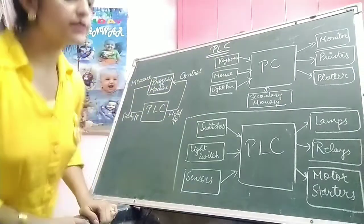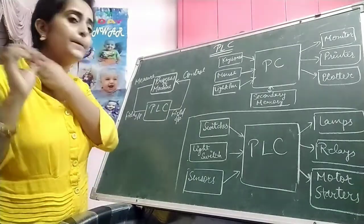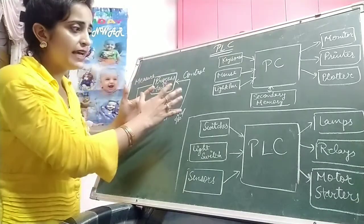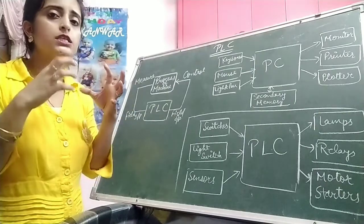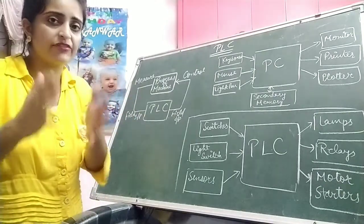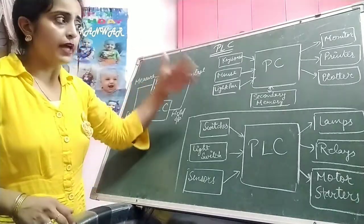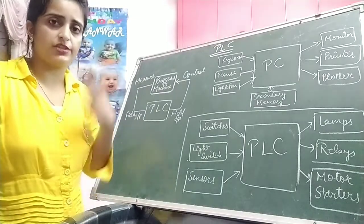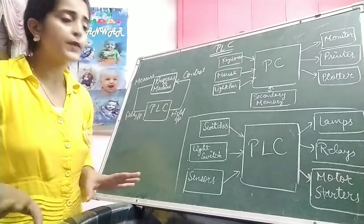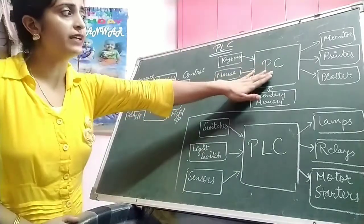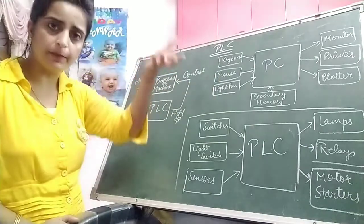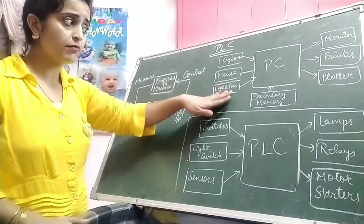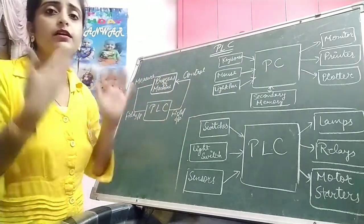The next topic is the building blocks of PLC and their function. Building blocks means PLC and PC — as PLC is a specialized computer designed specifically for industrial automation. As we all know about the PC — the personal computer we use at home, offices, or educational institutions. A PC has a keyboard for input, a mouse, and a light pen — like the digital pen we use nowadays for digital signatures on computer screens. These are all the inputs of the PC.